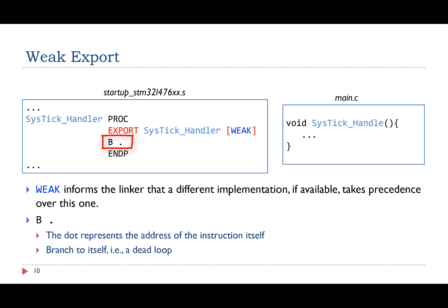The dot represents the instruction itself. Branch to itself, essentially a dead loop. If a different implementation of the SysTickHandler is available in the project, the linker will choose this new implementation and ignore the weak one.